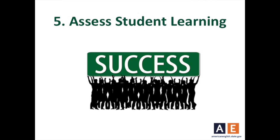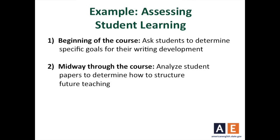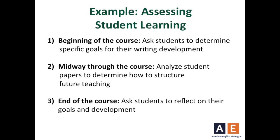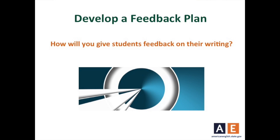This leads us to the final step, which is assessing student learning. Assessment needs to continue through the course. At the beginning of the course, you can ask students to write specific goals for their writing development. Midway through the course, you can analyze their papers in order to decide how to structure future teaching. And at the end, you can ask students to reflect on those goals and their development. Writing assessment also includes feedback. I recommend that you develop your own feedback plan — a feedback plan answers the question of how you will give students comments on their writing. I also like to tell my students my feedback plan and let them practice with the types of feedback I give.